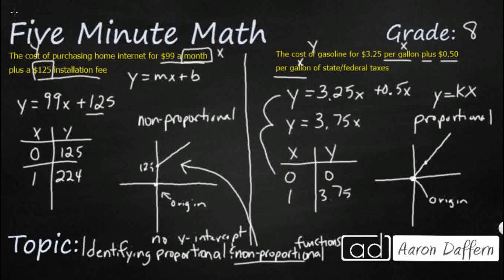So that's the main difference. If you want to figure out whether something is proportional or non-proportional, we are looking to see whether it goes through the origin and whether or not it has a y-intercept.